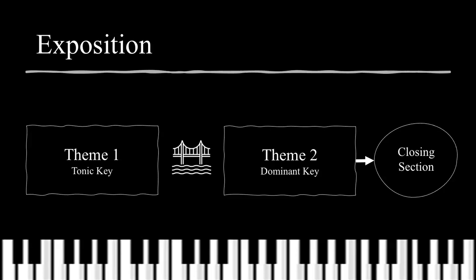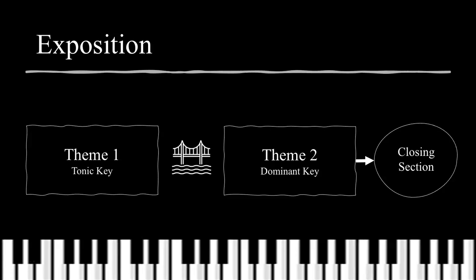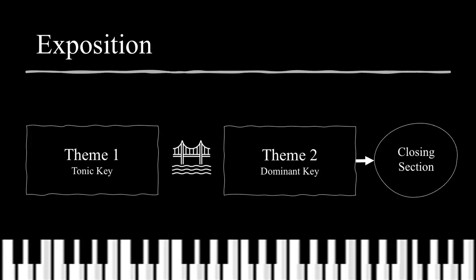The exposition has four primary sections. It begins with theme 1 in the tonic key and ends with the medial caesura. Theme 1 is followed by a bridge, or modulatory transition, that leads to the dominant area of theme 2. The exposition ends in the closing section through an essential expositional cadence.